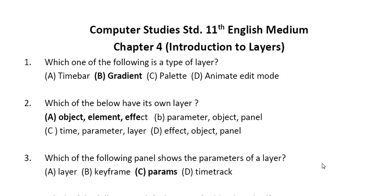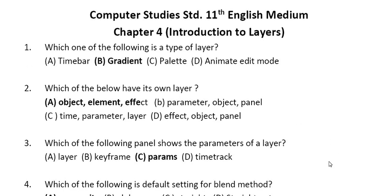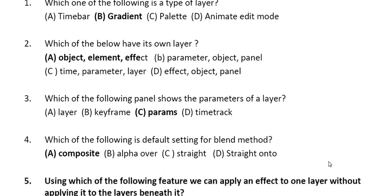Question 3: which of the following panel shows the parameters of a layer? The answer is Params panel. Where is the Params panel located? It is located on this corner. Whenever you click on or create any object, that panel shows you the properties of that object - the color, x and y distance, all the things.